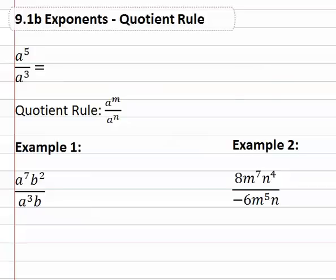To set this up, I want to consider a to the fifth over a cubed. A to the fifth in the numerator really means we've got five a's that are multiplied together, and a cubed in the denominator means we've got three a's multiplied in the denominator.